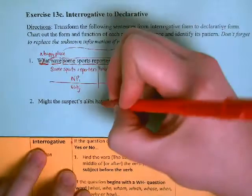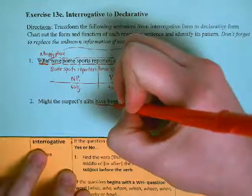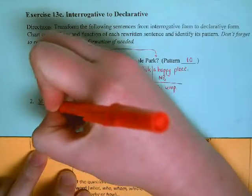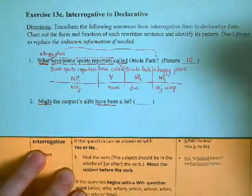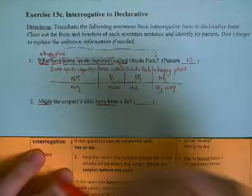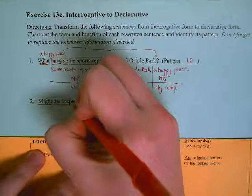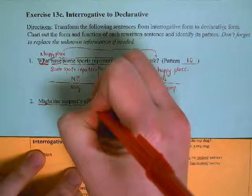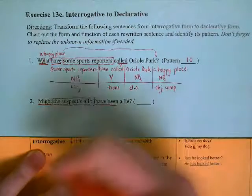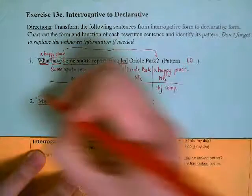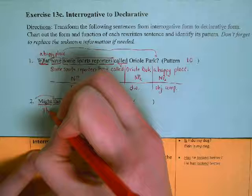Find my verb. 'Have been'—don't forget modal auxiliary 'might.' So 'might have been' is my verb. The subject should be in the middle. Yep, it is. What are we talking about? We're talking about the suspect's alibi. So move it before the verb. I'm going to put it over here and rewrite: the suspect's alibi.